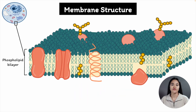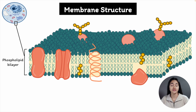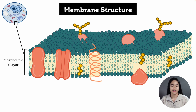In this video we're going to cover the structure of membranes and how their two primary components, lipids and proteins, are organized. We're going to be focusing on the plasma membrane, but most of what we cover also applies to internal membranes — the membranes around organelles including the endoplasmic reticulum, the Golgi, and mitochondria. By the end of this lecture you'll be able to identify each of these structures and understand their importance.